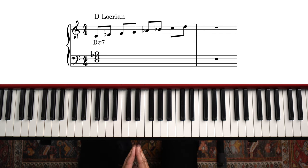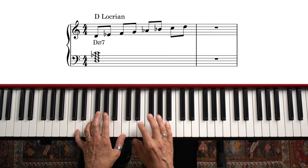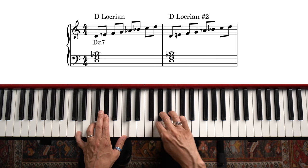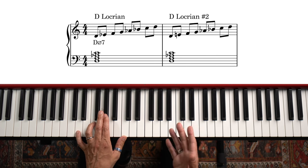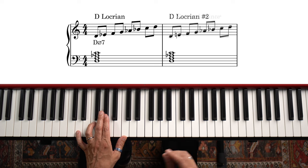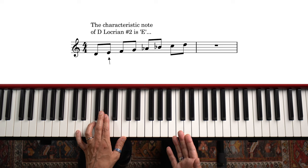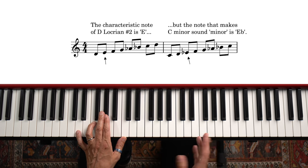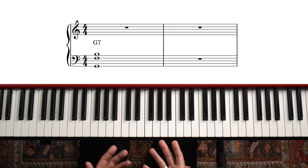For the D minor 7 flat 5 chord there are two options: Locrian and Locrian sharp 2. Locrian is the safer choice, and D Locrian is once again the same as C natural minor. Locrian sharp 2 is a really hip choice, but it should be used with some discretion. The money note in this scale is E natural, which directly contradicts the overall key of C minor. So we have to be careful with this one.